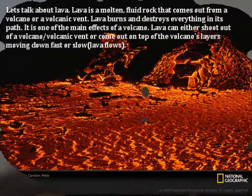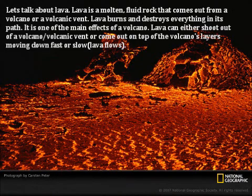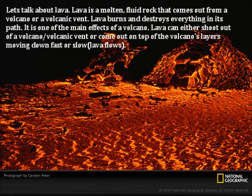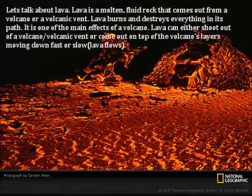Let's talk about lava. Lava is a molten fluid rock that comes out of a volcano or a volcanic vent. Lava burns and destroys everything in its path. It is one of the main effects of a volcano. Lava can either shoot out of a volcano or a volcanic vent, or come out of the top of the volcano's layers moving down fast or slow in lava flows.